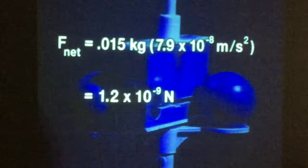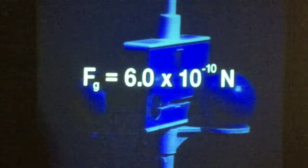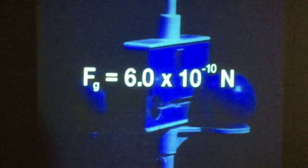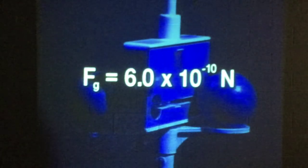The net force on the sphere can be found using Newton's second law. Since this force includes the push of the torsion wire, the gravitational force is only half this amount, or 6.0 times 10 to the minus 10 Newtons. This result demonstrates just how minute the gravitational forces are between common objects.